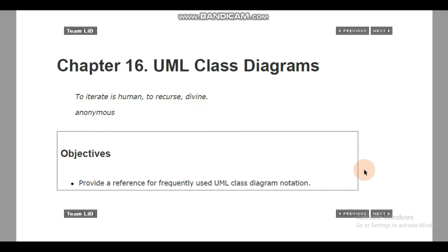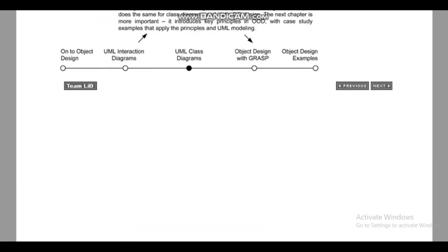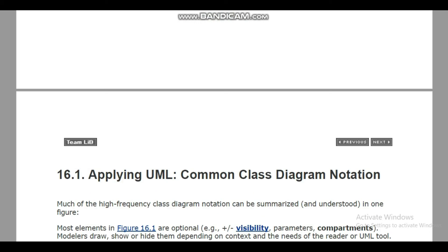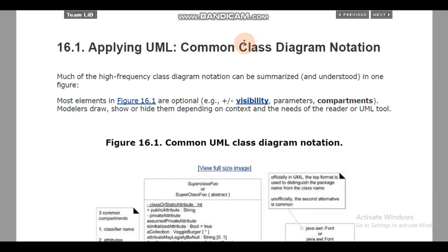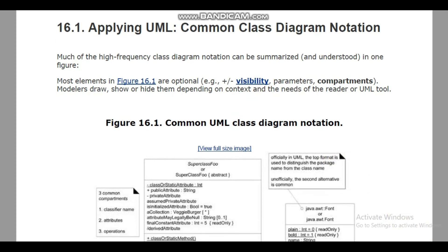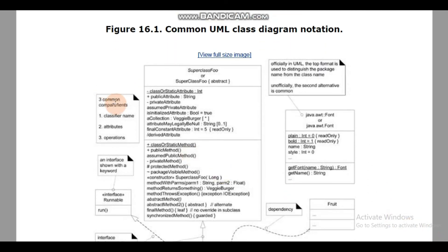Now let's look at more detail on class diagrams. We have discussed simple objects, attributes, and operations. In common class diagram notation, there are some optional elements such as visibility, parameters, and compartments. There are three common compartments: classifier name, attributes, and operations. In the first compartment we give the class name, in the second the attributes, and in the third the operations.